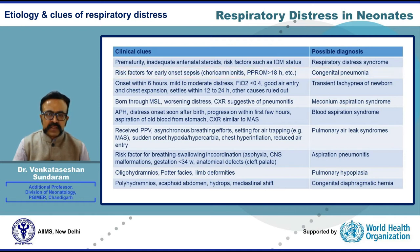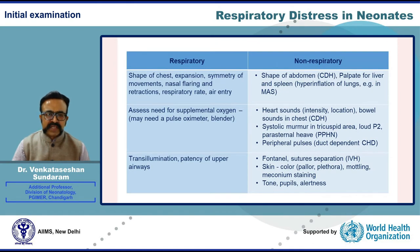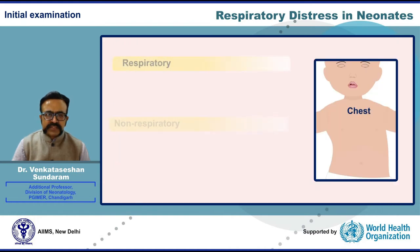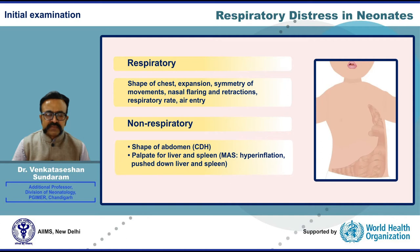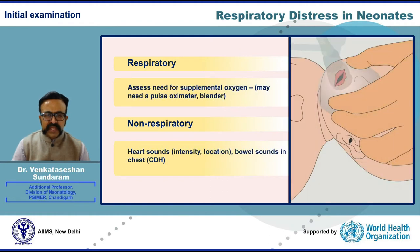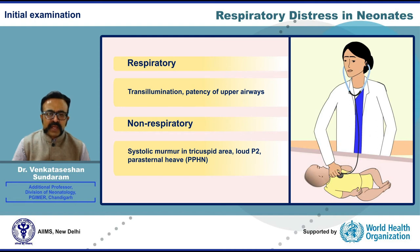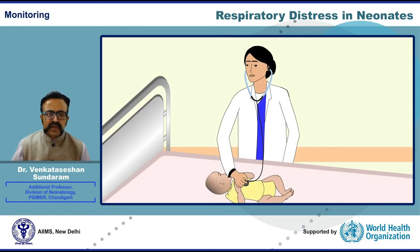Certain examination findings also help understand the neonate better and plan management. A thorough chest and abdomen examination can help diagnose congenital diaphragmatic hernia, which presents with a hyperinflated chest and a scaphoid or flat-looking abdomen due to shift of abdominal contents into the thorax. Chest transillumination using a cold light source helps diagnose pneumothorax. A systolic murmur in the tricuspid area, loud second heart sound, and parasternal heave point towards pulmonary artery hypertension.